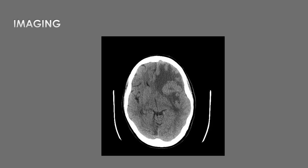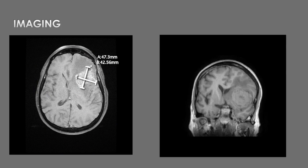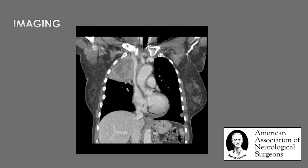The initial imaging studies show a left frontal mass with surrounding vasogenic edema and a midline shift. The MRI demonstrates a nearly 5-centimeter enhancing mass in the left frontal lobe. Additional imaging studies show a large right-sided apical lung mass.